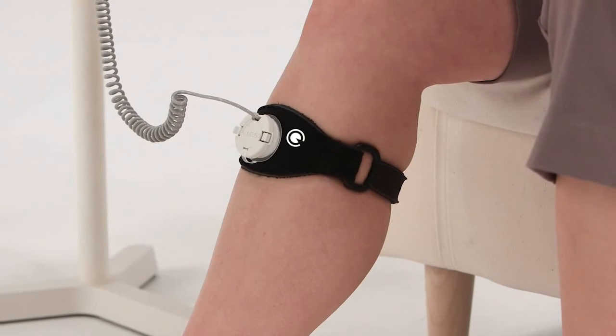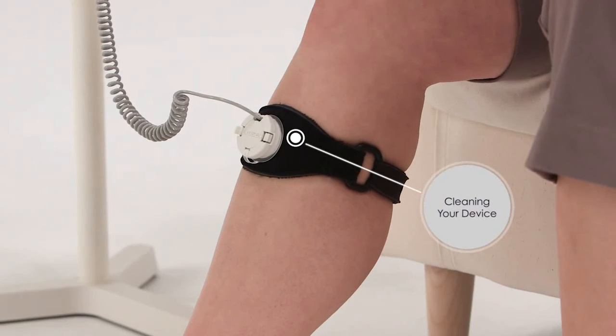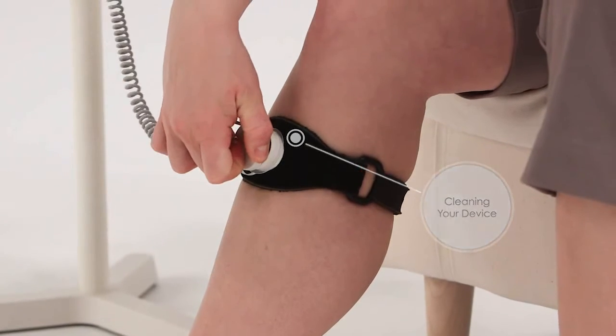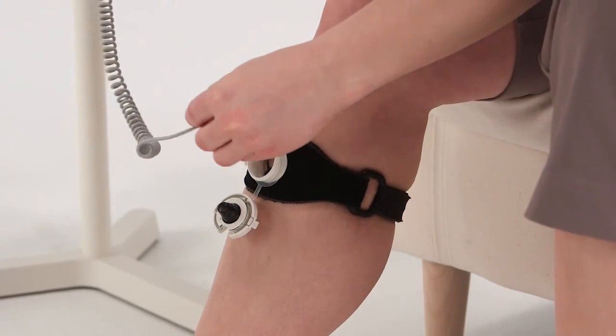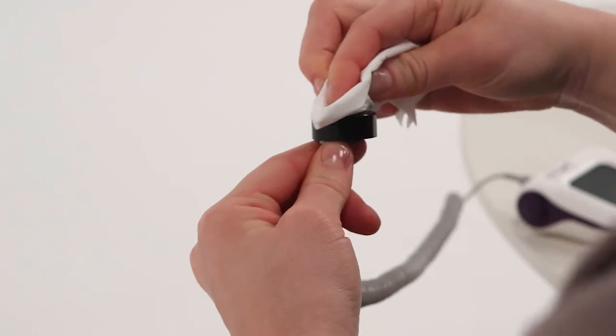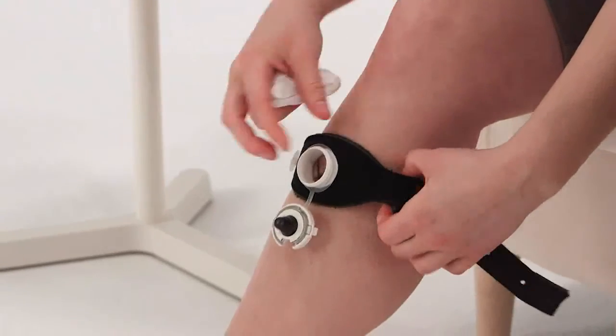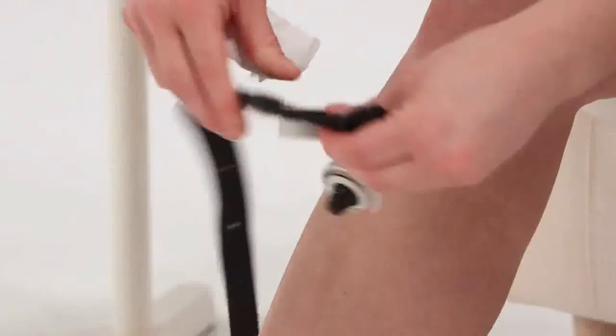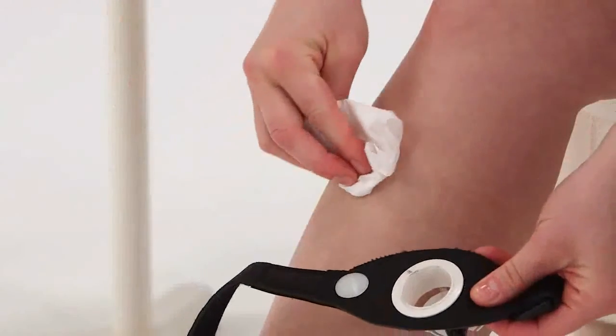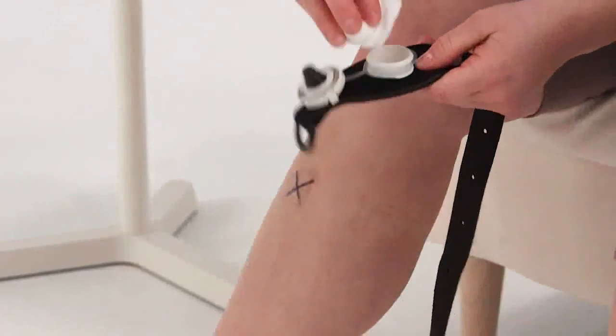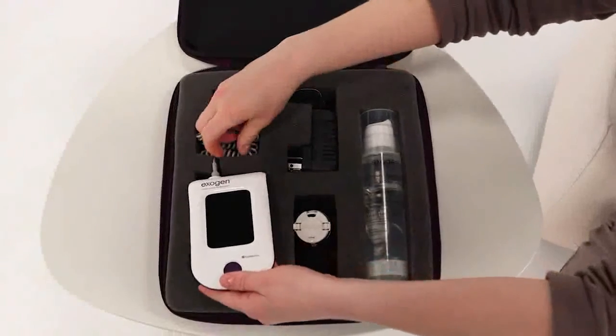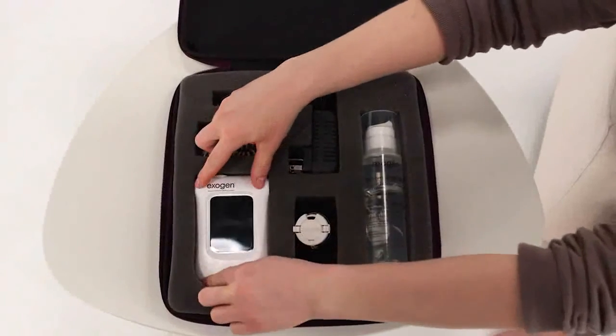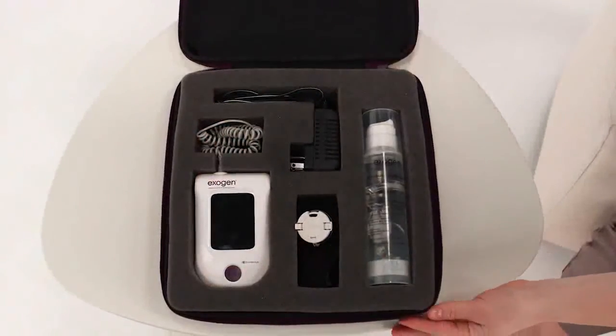To clean your device, squeeze the tabs to open the cap and gently remove the transducer. Wipe off the gel with a soft cloth, cotton swab, or paper towel. Remove the strap and clean the gel from your skin and the strap. Store all the components of your Exogen device in the carrying case to protect them from getting lost or damaged.